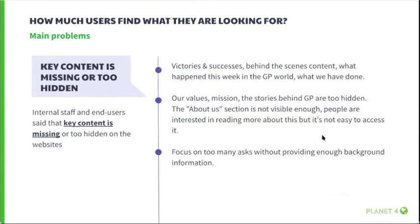Staff members and end users also said that key content is missing or too hard to find on the website. For instance, victories, values, and background stories are too hidden. The 'About Us' section is not visible enough — people are interested in reading more about this but it's not easy to access.